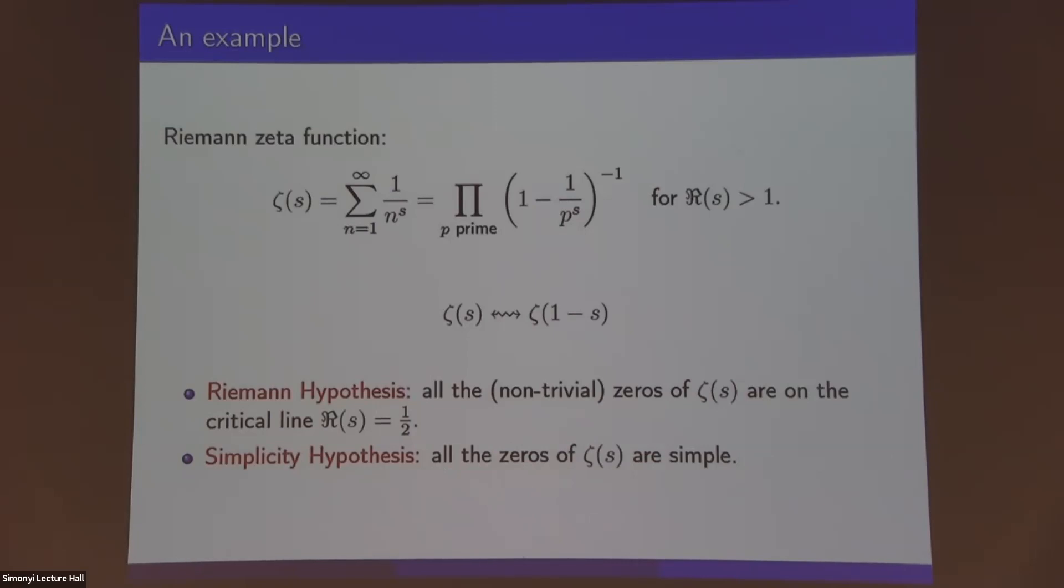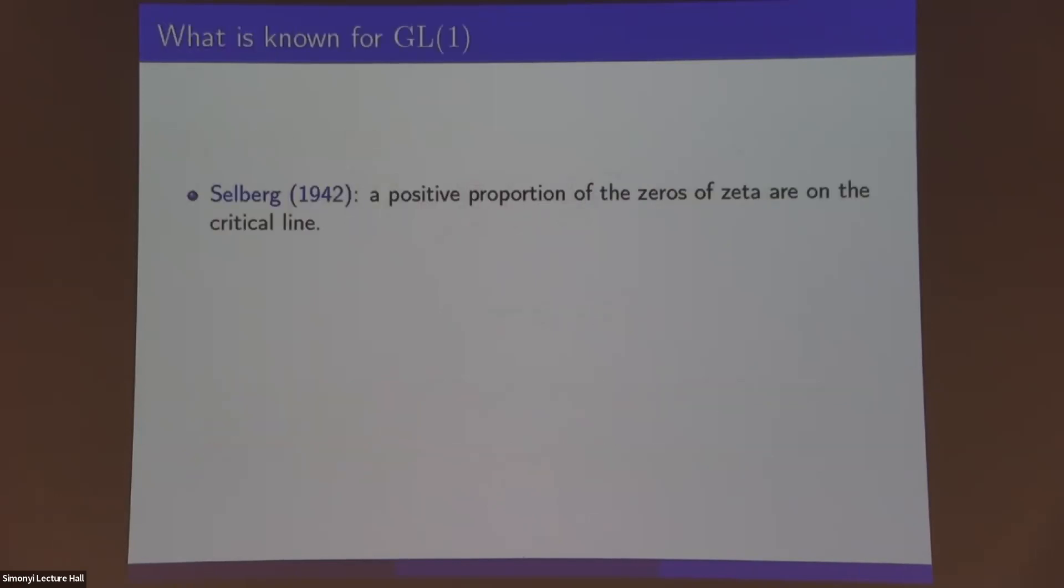Let me tell you what sorts of things are known for the zeta function. There's the result of Selberg from 1942, which says that actually a positive proportion of the zeros are on the critical line. You can think of this as a strong approximation or maybe a weak approximation of the Riemann hypothesis. A lot of the zeros are on the critical line. Maybe not all of them, but that's already quite interesting. In fact, this positive proportion was improved by a different method by Levinson in 1974. He proved that more than one third of the zeros are on the critical line.